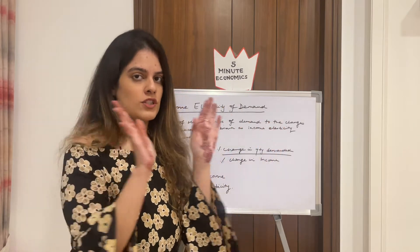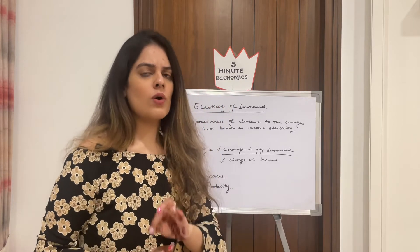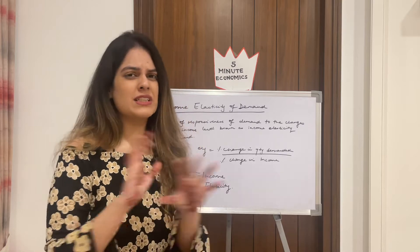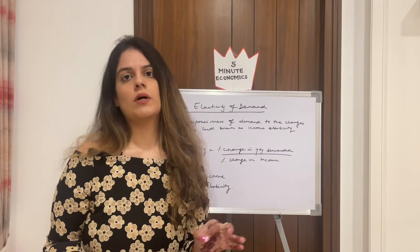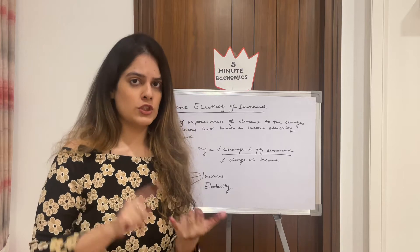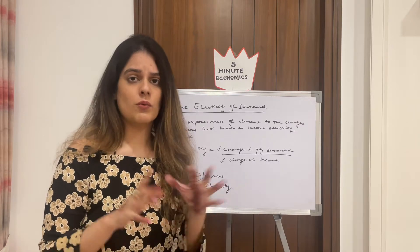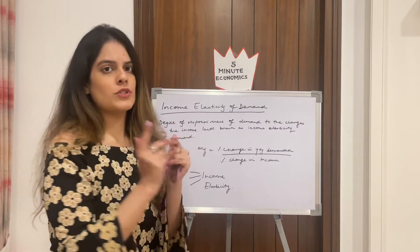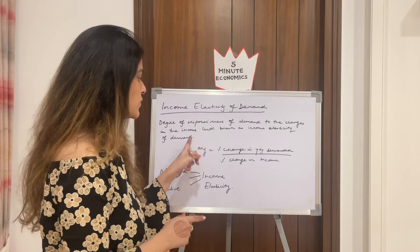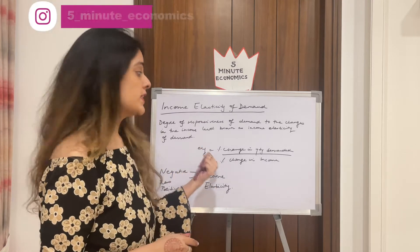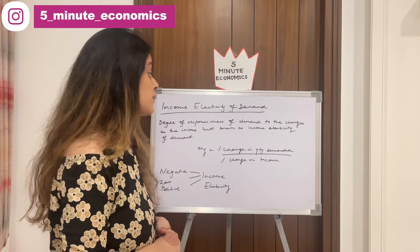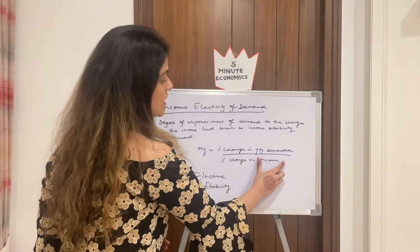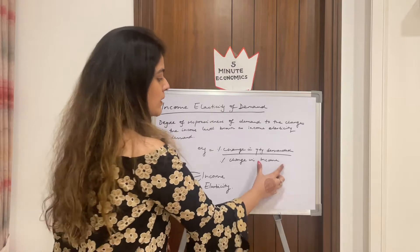In this case, completely forget price and focus solely on income. We are talking about how changes in income — whether increasing or falling — affect our demand. The formula you should know, especially for numericals, is: Ey (income elasticity) = percentage change in quantity demanded divided by percentage change in income.